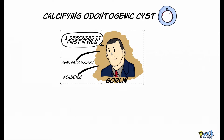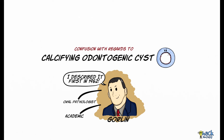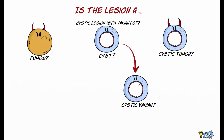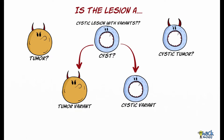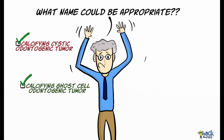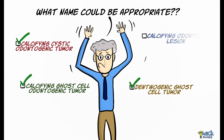Since this lesion was first described, there has been much confusion with regards to the nature or behavior of this lesion and its terminology — specifically as to whether this lesion could be a cyst, a tumor, a cystic tumor, or a lesion encompassing both a cystic variant and a tumor variant. It has also been termed calcifying cystic odontogenic tumor, calcifying ghost cell odontogenic tumor, dentinogenic ghost cell tumor, calcifying odontogenic lesion, and ghost cell cyst.